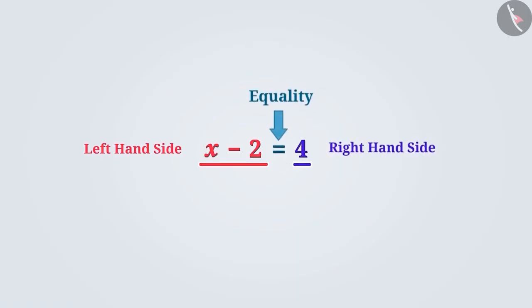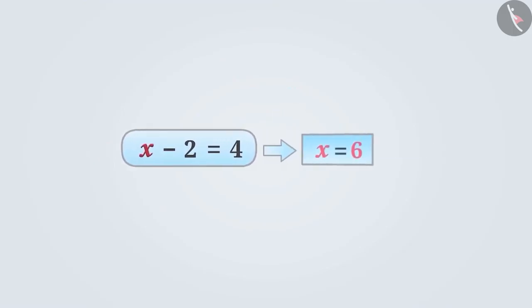So far, we have understood that there is a restriction on the equation with a variable. Its left-hand side and right-hand side have equal values. This is expressed by the symbol of equality. Each equation has only one solution that satisfies the equation or condition.